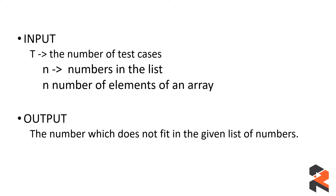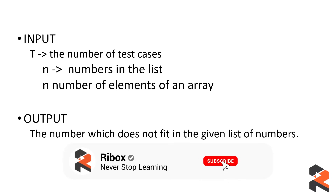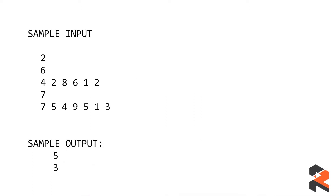Now let's look at the input and output format. The input has T number of test cases, followed by N — the count of elements in the list — and then N numbers in the array. We need to output the position of the number which does not fit. The sample input has T equal to two, and the first test case has six elements: 4, 2, 8, 6, 1, 2.